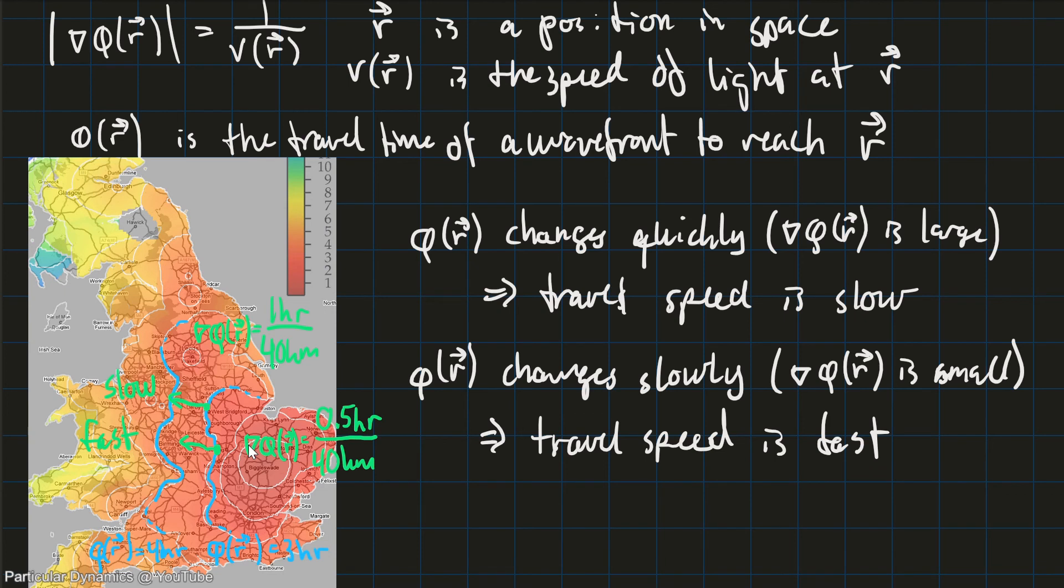And so this brings us back to the original equation where we have the equation says that the gradient of the travel time is inversely proportional to the speed at that place. And so this confirms our observations. When the gradient of the travel time is large, the travel speed is low. And when the gradient of the travel time is small, the travel speed is fast. They are behaving oppositely to each other.